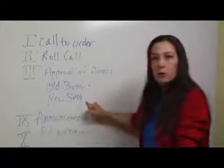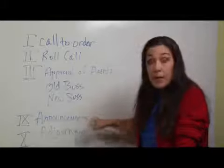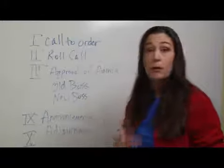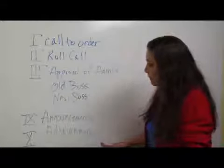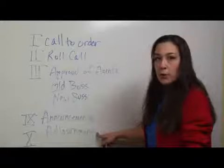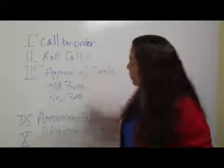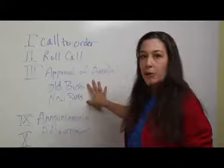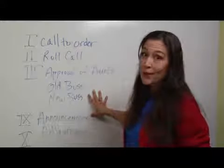So old business, new business, then announcements — anything we need to announce, maybe the next meeting will be held, whatever it is — and adjournment. That's the last thing that we're going to do, adjournment. So you always want to follow this order. The only thing that will change, or have a variable, is how much new business and how much old business you have.